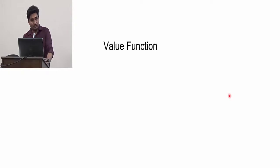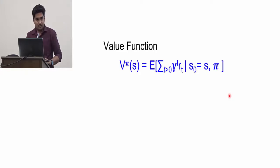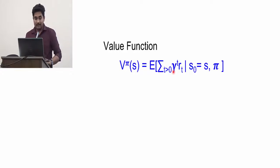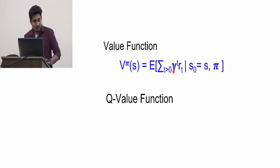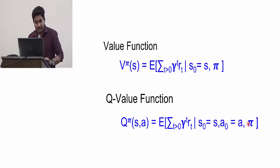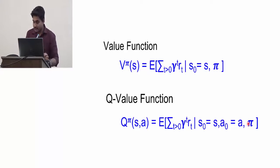In deep reinforcement learning, how do you decide which state you want to go to, or how good a state is? This is decided by two things. The first is the value function — given a state s, if you follow the policy pi, what expected reward are you going to get? There is also the Q value function, which tells that in state s, if you take action a (in Mario's case, going right) and then follow policy pi, what expected reward will you get? Policy is simply what action you want to take in each state.